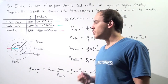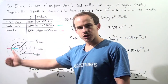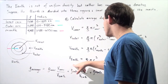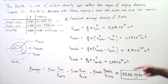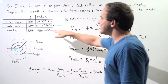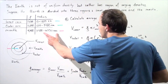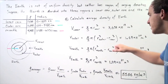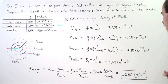In the next step, we want to calculate the actual volume of the Earth. To do this, we simply take four-thirds pi r cubed, where the radius is the radius of the Earth, 6,380 kilometers. We take this value, multiply it by 1,000, cube it, multiply by four-thirds pi, and we get a volume of 1.09 times 10 to the 21 meters cubed.